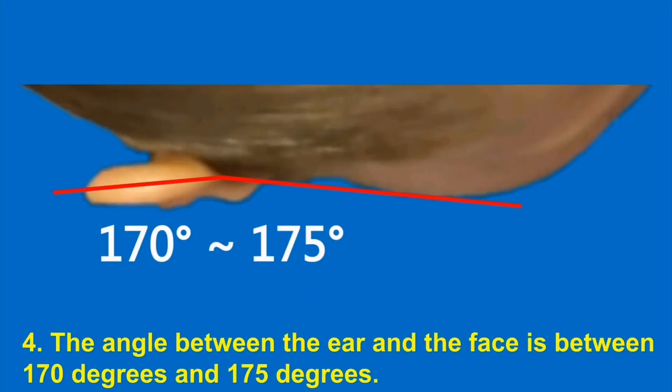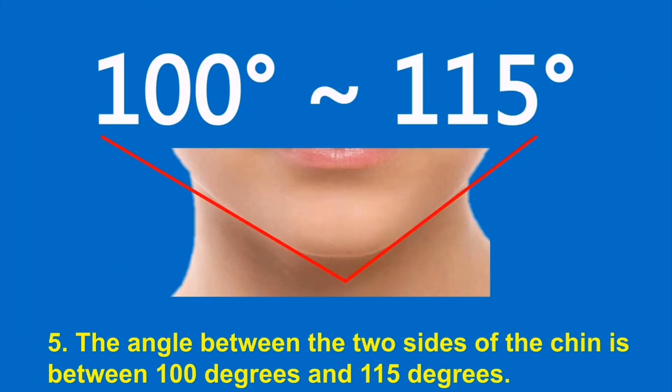4. The angle between the ear and the face is between 170 degrees and 175 degrees. 5. The angle between the two sides of the chin is between 100 degrees and 115 degrees.